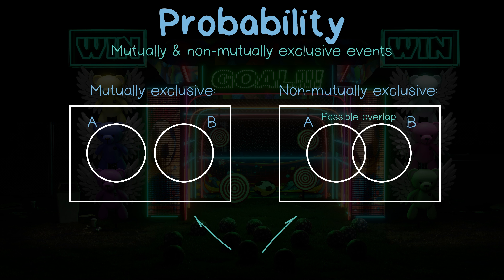I've drawn them here for you as Venn diagrams, which isn't something you necessarily need to do, but you could imagine them as Venn diagrams, and then you'd see that for one of them the circles do not overlap, and for the other one the circles do. For non-mutually exclusive events, you're always going to be able to imagine a Venn diagram which has an intersection, an overlapping area, whereas for mutually exclusive events, it will never occur.